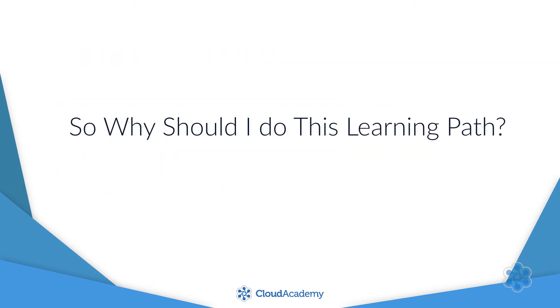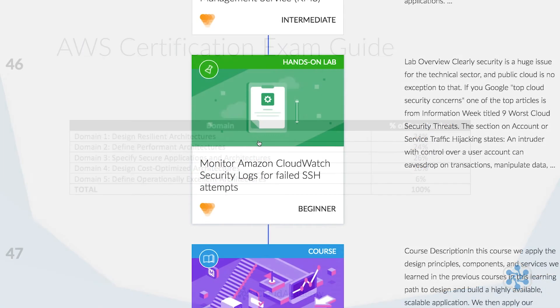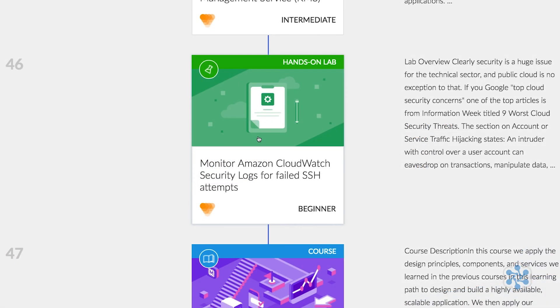The learning path is constructed around the five domains of the AWS certification exam guide, and our team updates this content continuously so it's in line with the current version of the certification syllabus.